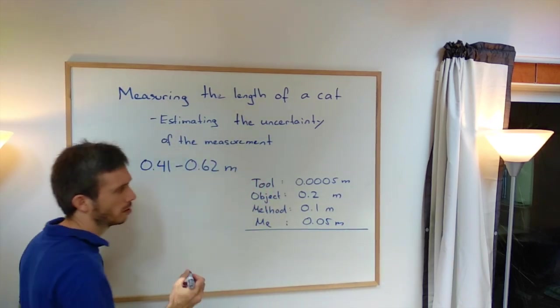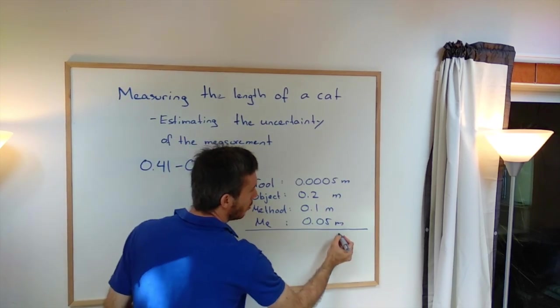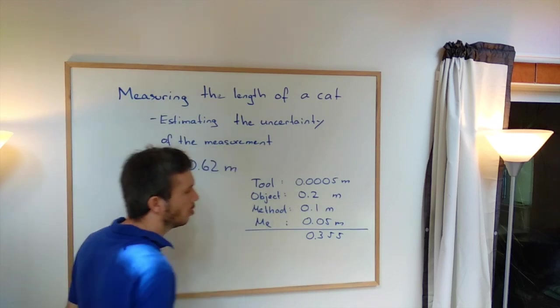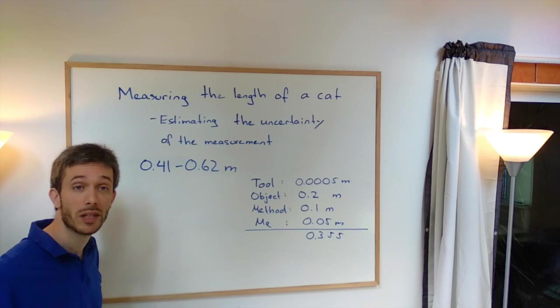So these are all estimations, right? So don't forget, it's estimations. Then what I'm doing, I'm adding them up. So 5, 5, 3, 0. So I could have been off according to this estimation by a good 35.5 centimeters.